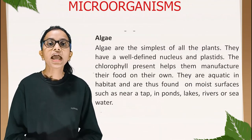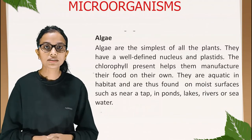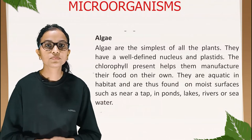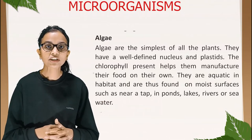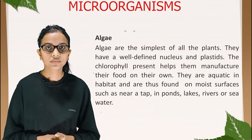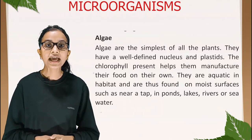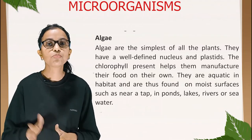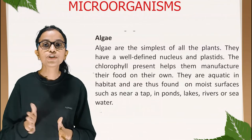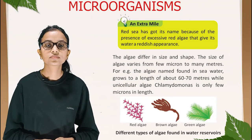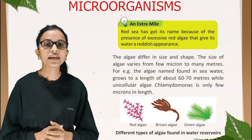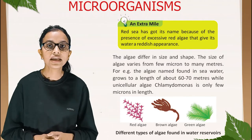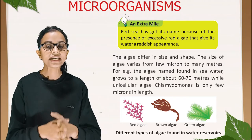Algae are the simplest of all plants. They have a well-defined nucleus and plastids, and the chlorophyll present helps them manufacture their own food. They are aquatic in habitat, found on moist surfaces such as near taps, in ponds, lakes, rivers, or seawater. An interesting fact: the Red Sea got its name because of the presence of excessive red algae that give its water a reddish appearance.